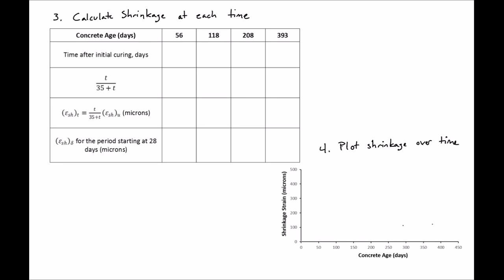Steps 3 and 4 are to calculate the shrinkage at each time, which we'll do using this table, and then we'll plot our shrinkage over time using the graph shown below. First we need to calculate the shrinkage at each time.